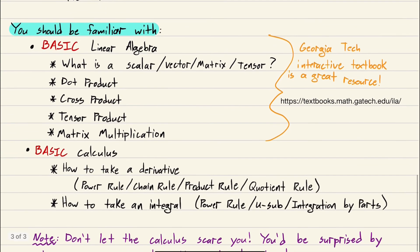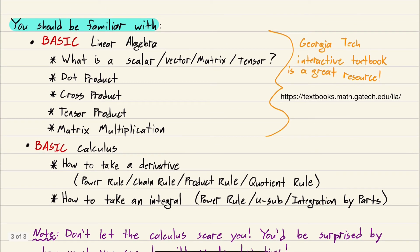What should you be familiar with coming into these videos? These are the prerequisites. Basic linear algebra - when I say basic, I mean dot product, cross product, and matrix multiplication. Tensor product is the odd one out; that one's a little hairy. We won't touch that until much later when we start talking about rigid bodies.